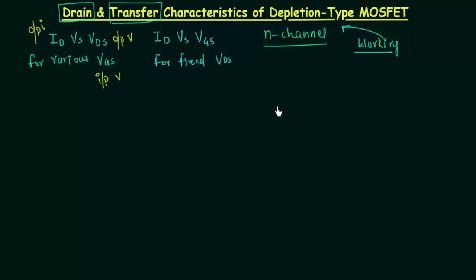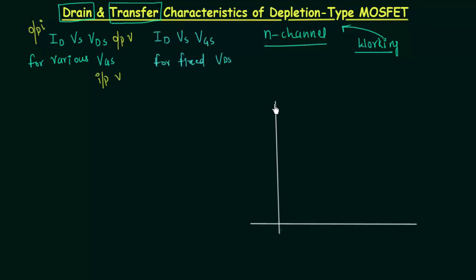I will draw the y-axis and the x-axis. The y-axis represents the drain current ID in milliamps, and the x-axis represents the voltage VDS in volts.